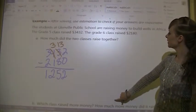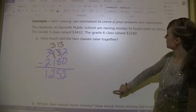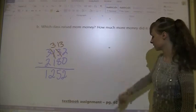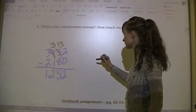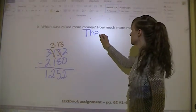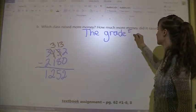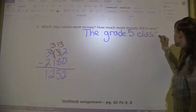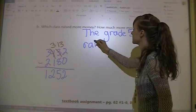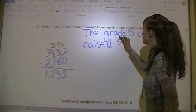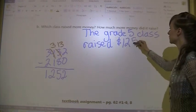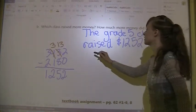So we've got this. Now what class was it that raised the more money? It was the grade five class. The grade five class raised $1,252 more.